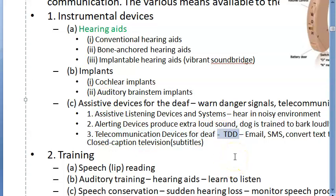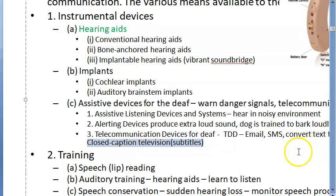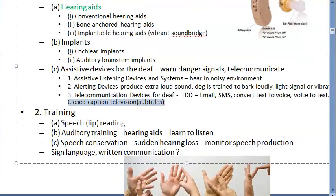Then you have telecommunication devices for the deaf — TDD — which can convert text to voice and voice to text. Nowadays email and SMS also help the person communicate. When watching TV, subtitles or closed captions (as they're called in the US) help the hearing impaired follow the content.